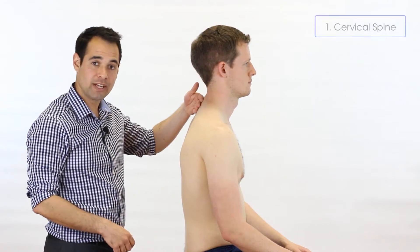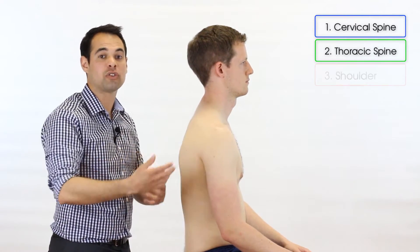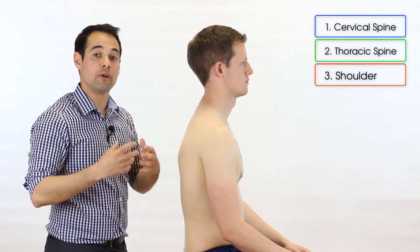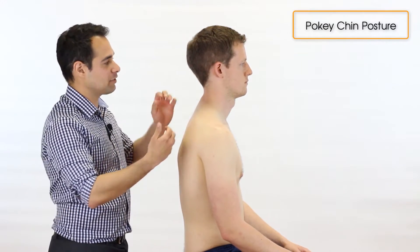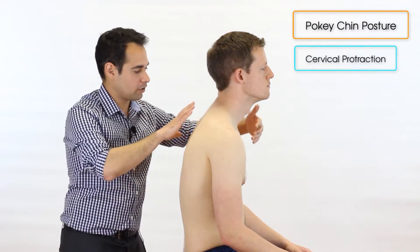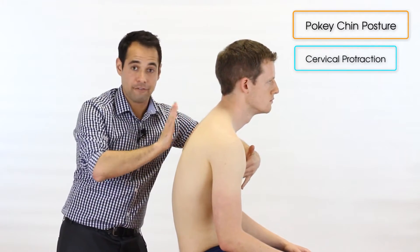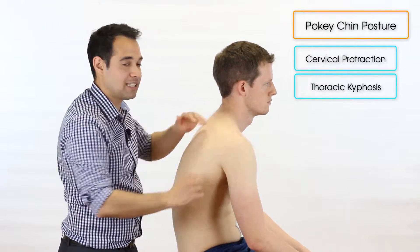Now we're going to continue our observation of the cervical spine in a lateral view. There are three main structures we're going to be considering: number one, the cervical spine; number two, the thoracic spine; and number three, the shoulder or scapula. The most common presentation in this view when a patient is in pain is what we call pokey chin posture — where the cervical spine is in a more protracted position, the thoracic spine is more kyphosed, and the shoulder or scapula is also more protracted.